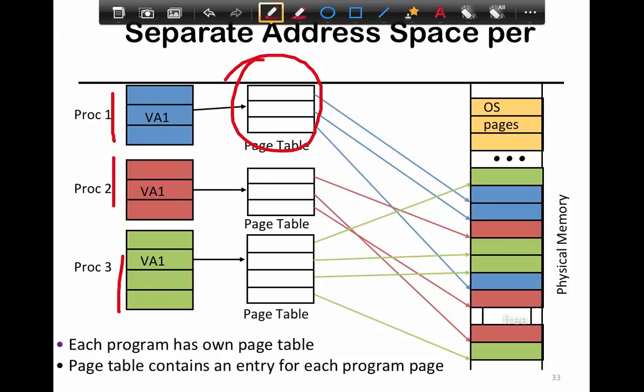A lot of these entries are not necessarily valid. For example, in this case, blue and red each have three pages, and this one has four pages.